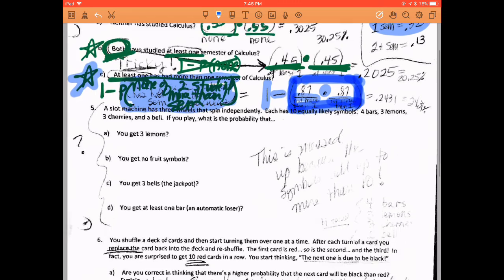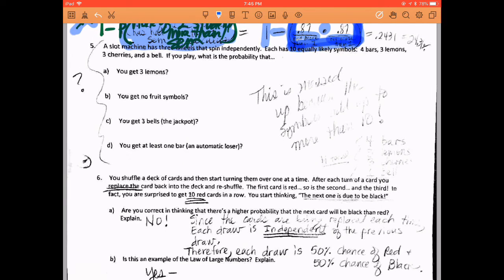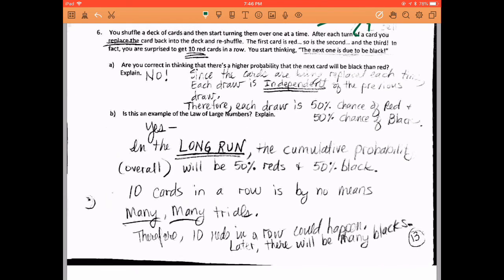Alright, moving on to the next one. You can see that I'm just not going to do this problem. It's kind of a messed up problem. It talks about four bars, three lemons, three cherries, and a bell. And that's not 10 items. That is, in fact, four plus three plus three plus one makes 11 items. So I'm going to have to fix this problem for next year. It is not done correctly. So we're just going to skip it.